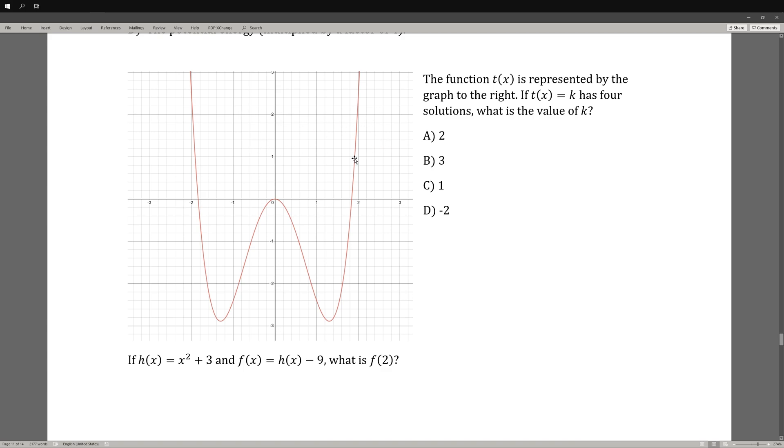2 only 2 times. B is 3, that's only 2 times also. 1, 2 times also. And D, negative 2, that is touched 4 times, crossed 4 times. 1, 2, 3, and 4. So D would be the correct answer.